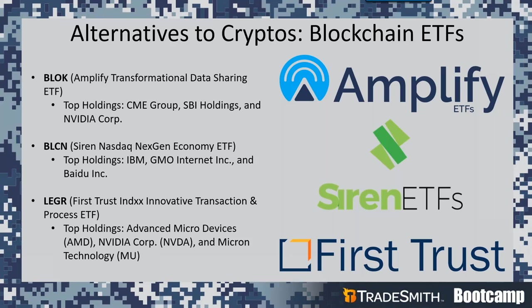The SIREN NASDAQ Next Gen Economy ETF, ticker BLCN, tracks the NASDAQ Blockchain Economy Index, which gauges the performance of companies involved in developing, researching, supporting, or utilizing blockchain technology. It also follows a blended strategy investing in growth and value stocks. Some of the top holdings include IBM (a tech and hardware services company), GMO Internet Inc. (a Tokyo-based internet company that develops online advertising and media), and Baidu (a China-based internet services and artificial intelligence company).